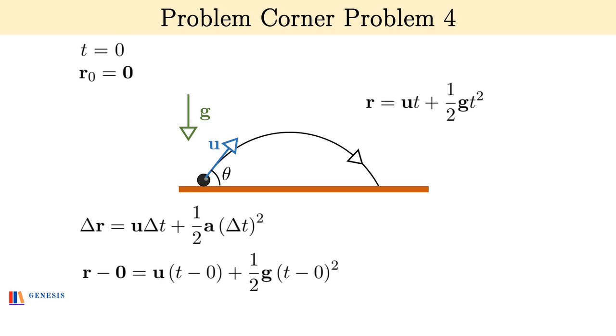Now look at this expression carefully. This is the vector addition of two vectors: u vector into t and half g vector into t square. The vector addition of these two vectors gives the vector r vector. Can we draw a vector triangle for this? Yes we can.